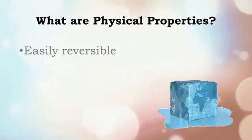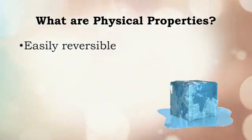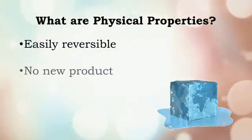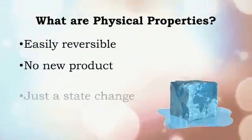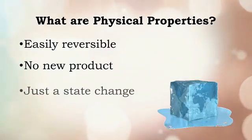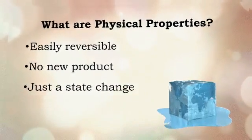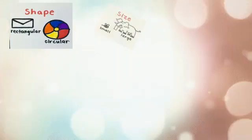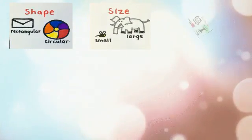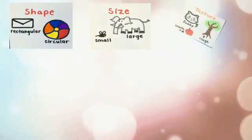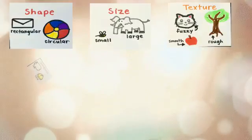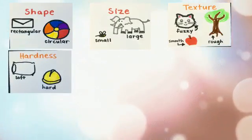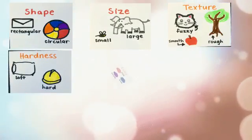Physical properties are easily reversible. That means that it can always return to its original state and no new product is formed. Physical properties include shape, size, texture, hardness, odor, state, mass, and color.